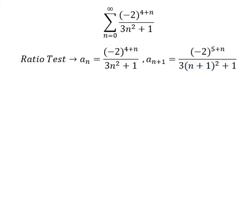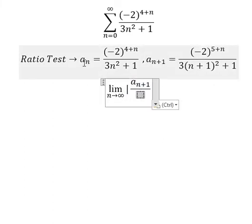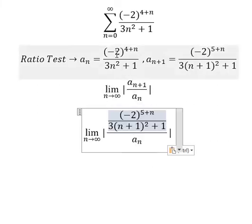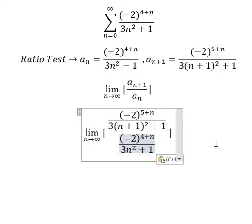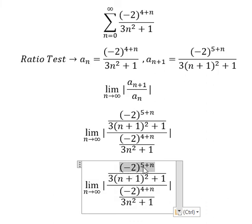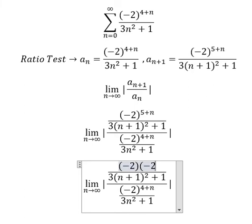Now we put the limit and we put a_{n+1} over a_n. So this one we put in here, this one we put in here. This one, negative 2 to the power of 5 plus n, we can put as negative 2 multiplied by negative 2 to the power of 4 plus n.